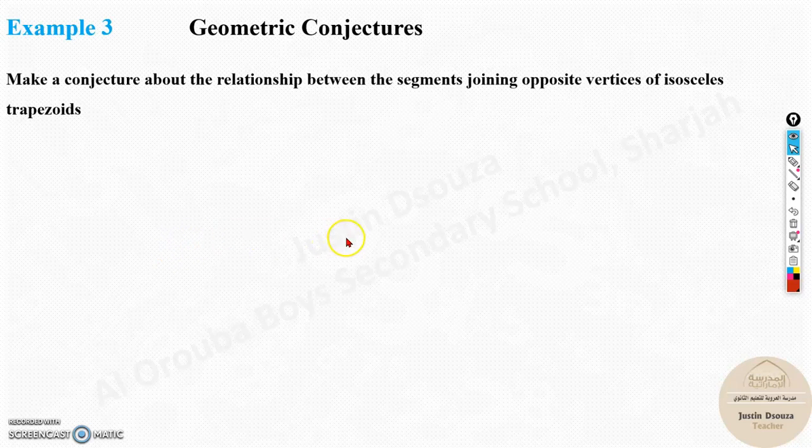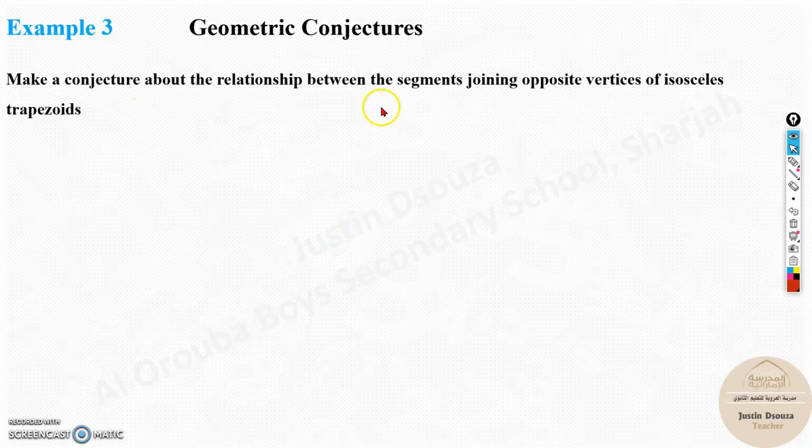Example 3 is on geometric conjectures. Make a conjecture about the relationship between the segments joining opposite vertices of isosceles trapezoids.